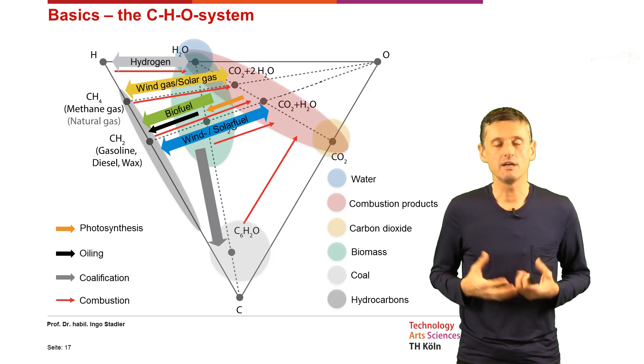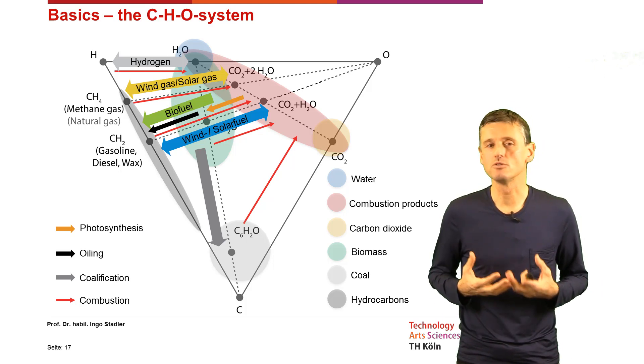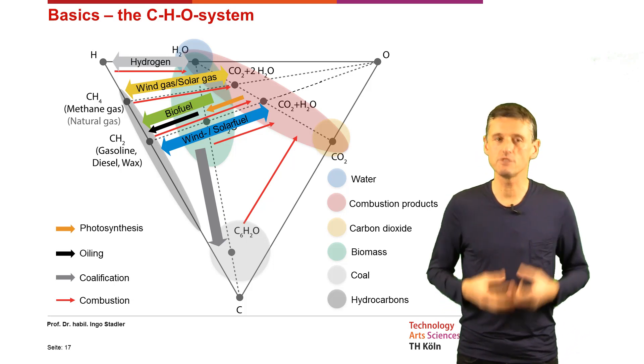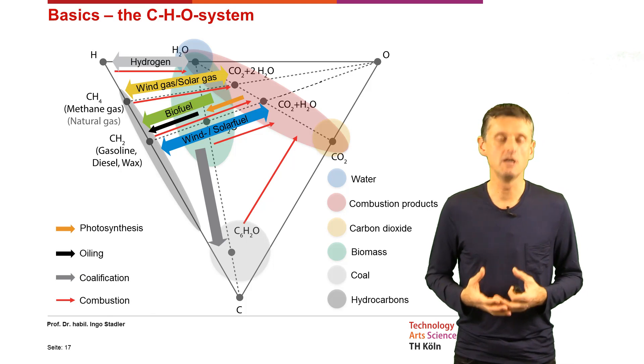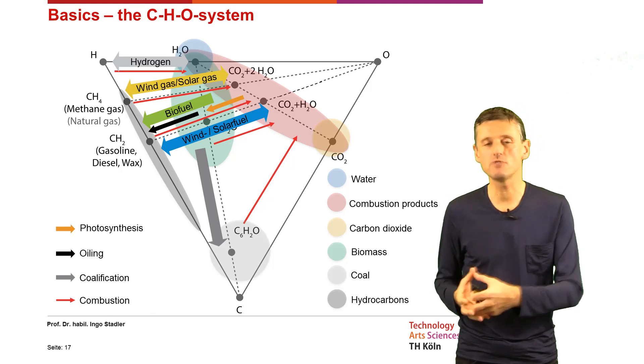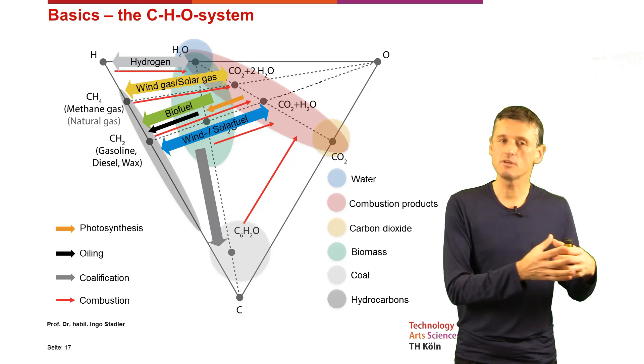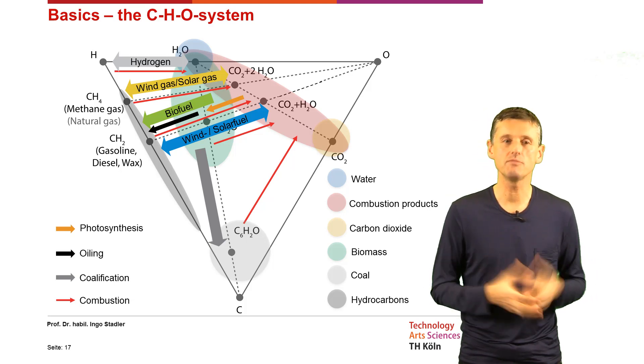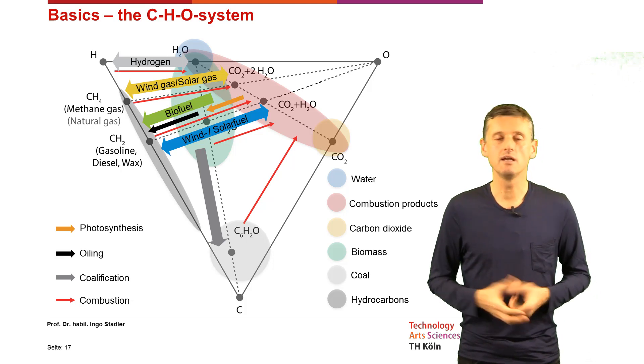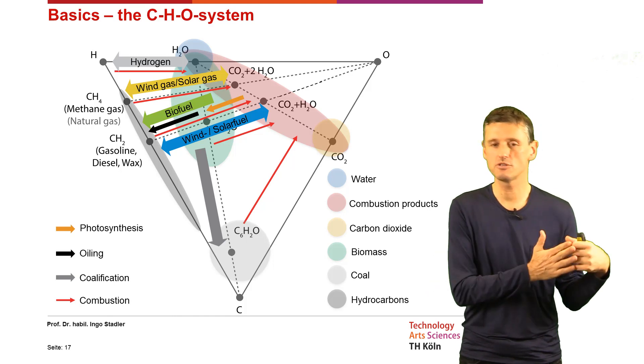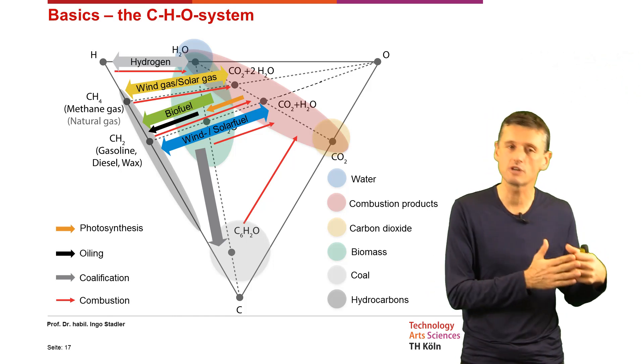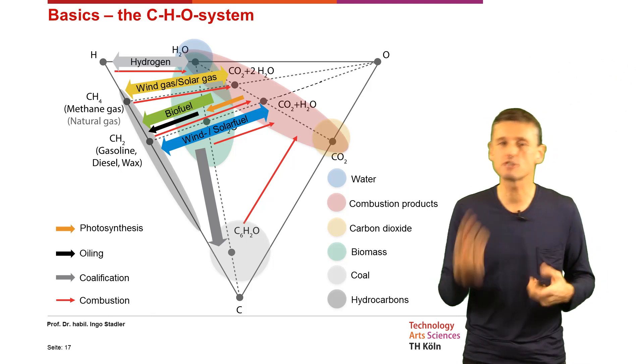And by other technologies, but also the same way of thinking, we can use solar energy, we can use wind energy and biofuels to come from electricity and biofuels and generate chemical fuels, either hydrogen, either methane or liquid hydrocarbons again. And then we have the same what nature is producing over many, many years, we can do in a short time. And then of course, we have a closed cycle.